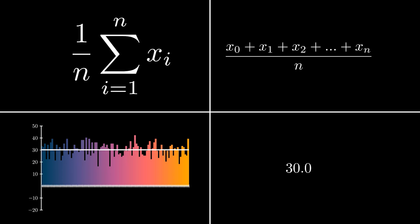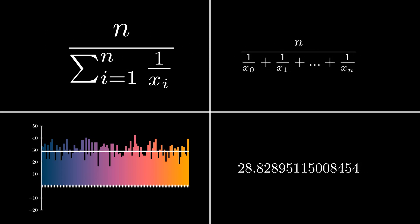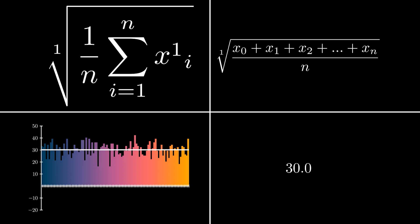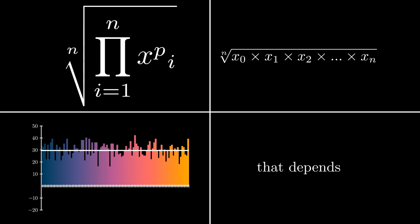First we start with the usual arithmetic mean, just to see how this works. Then we can upgrade it to a weighted mean, where every value is multiplied by a weight to change the importance of specific values. Then we have the harmonic mean — I think I may need to do a separate video about this because the math is really interesting. We can also expand the arithmetic mean into higher-order means: the quadratic one, the cubic one, and on and on. Here you have the generalized version. But we don't need to add them — we could also multiply them, and in order to balance out the multiplication, we just root the result. That's the geometric mean.